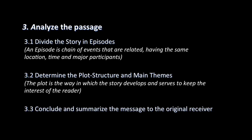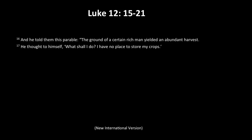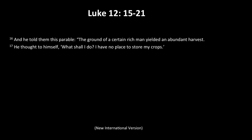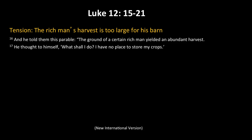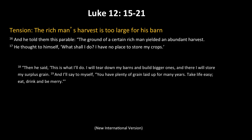After that we conclude and summarize the message to the original receiver. Luke 12, verses 15 to 21 is actually one episode — the same people, location, and time. Now let's determine the plot structure and main themes by reading from verse 16: 'The ground of a certain rich man yielded an abundant harvest. He thought to himself, what shall I do? I have no place to store my crops.' That's actually a good problem! So the tension is: the rich man's harvest is too large for his barn. What is he going to do?